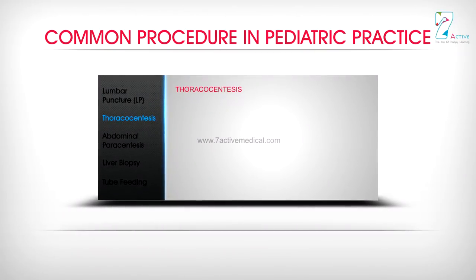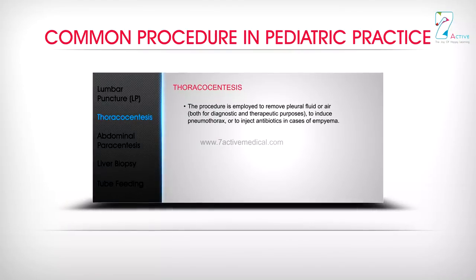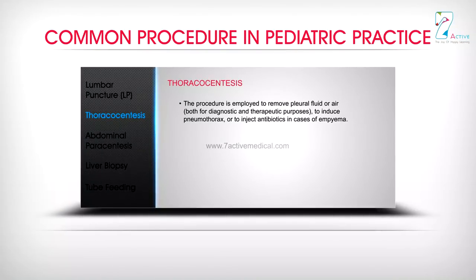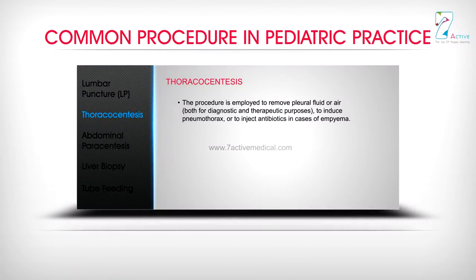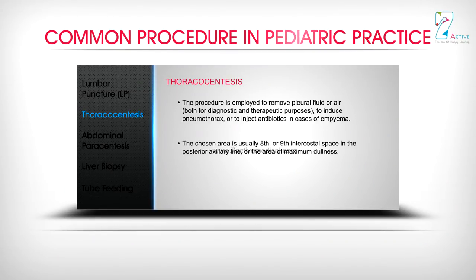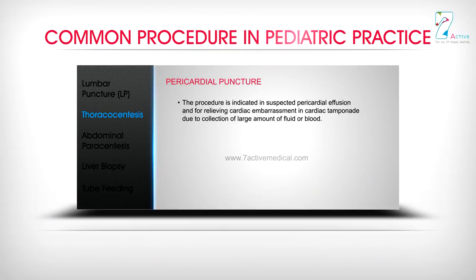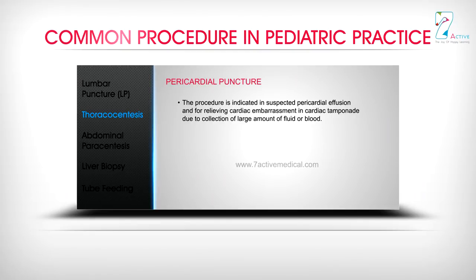Thoracocentesis: The procedure is employed to remove pleural fluid or air, both for diagnostic and therapeutic purposes, or to inject antibiotics in cases of empyema. The chosen area is usually the 8th or 9th intercostal space in the posterior axillary line or the area of maximum dullness. Pericardial puncture: The procedure is indicated in suspected pericardial effusion and for relieving cardiac embarrassment in cardiac tamponade due to collection of a large amount of fluid or blood.